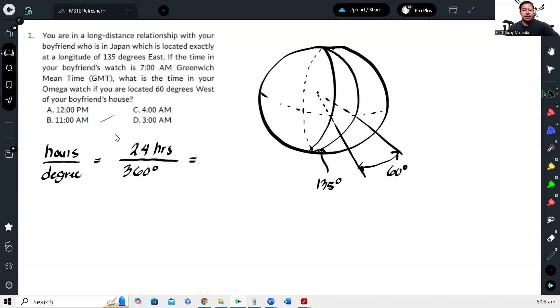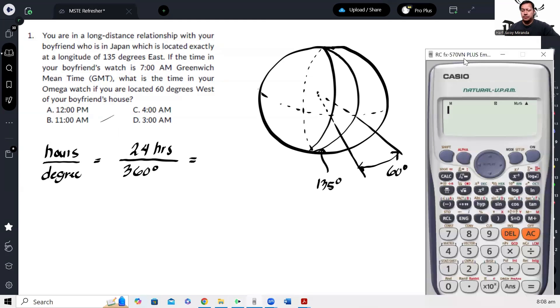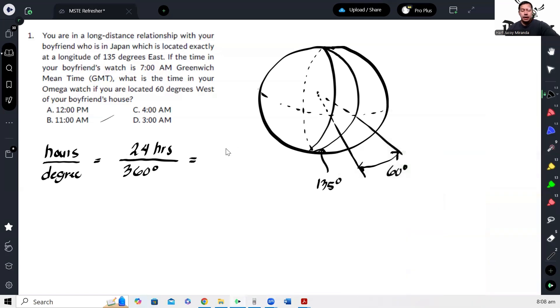Okay, and that will give us 24 over 360, that will give us 1 over 15, or if you want it in decimal. Let's keep it as 1 over 15. So that means for every 15-degree difference in the world, there is a 1-hour difference.